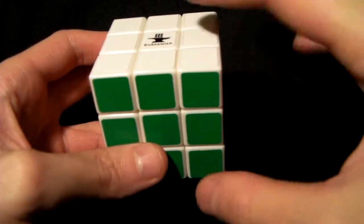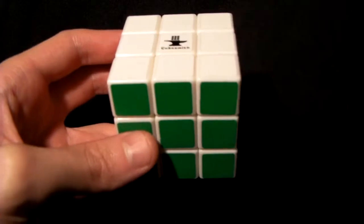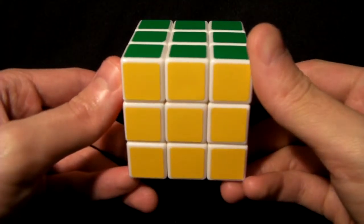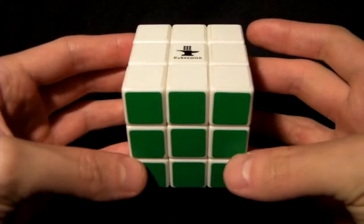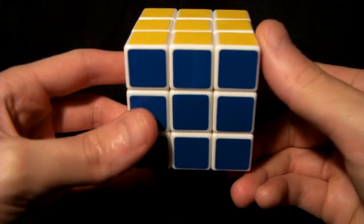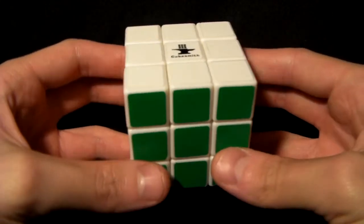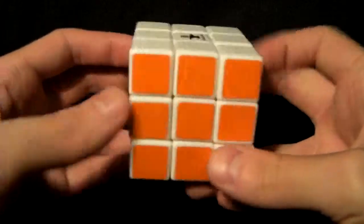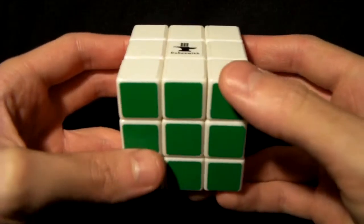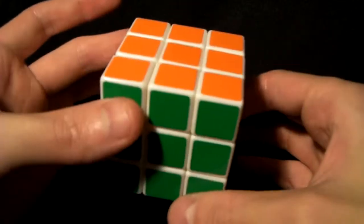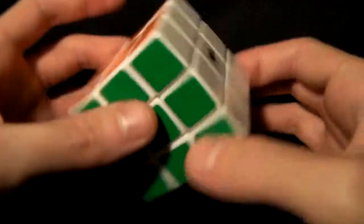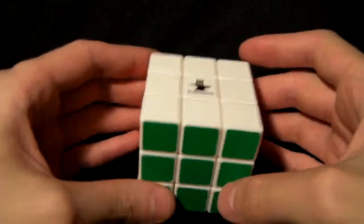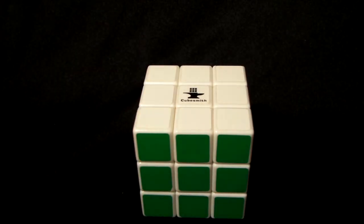So X would turn like R, and these are always lowercase as well. So we'd have x - it's just like an R - x prime is like R prime, and x2. Similarly for y, it's like U, so we have y, y prime, y2. Lastly is z, and z is like F, where we have z, z prime, z2. Those come up occasionally but not terribly often. So that's about it for 3x3 notation.